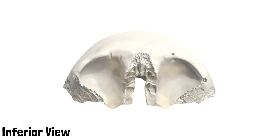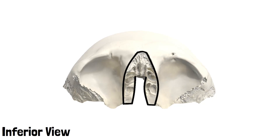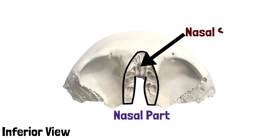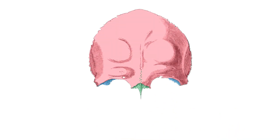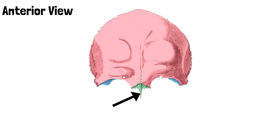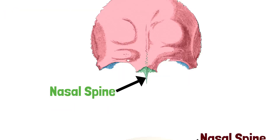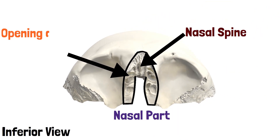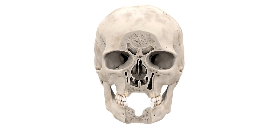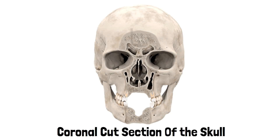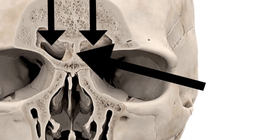Again we have the inferior view of the bone. The part outlined in black is the nasal part, and you can see that it surrounds the ethmoidal notch. Here the nasal spine is present. For a better understanding, let's look from the anterior view. This green shaded part is the nasal spine, which lies anteriorly and is directed downwards. This hole is the opening of the frontal sinus, which leads into the frontal sinus. This is the coronal cut section of the skull. These two sinuses are the frontal sinuses, divided by this septum of the frontal sinus.